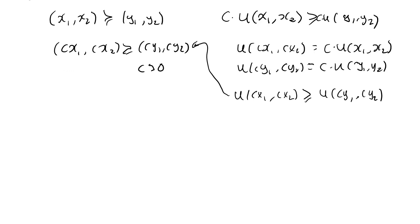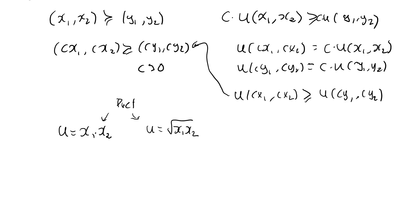Let me point out one final thing. Let's say that we have preferences that can be represented by the utility function x1 times x2. Now this utility function is not homogeneous of degree one. Does that mean that these preferences are not homothetic? The answer is actually no. We know that if preferences can be represented by a utility function u, then any monotonic transformation of this utility function will represent exactly the same preferences. So these preferences can be represented equally well by the square root of x1 times x2, which is homogeneous of degree one.